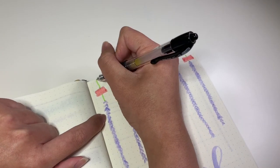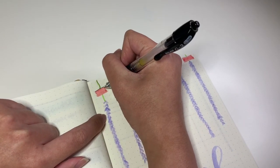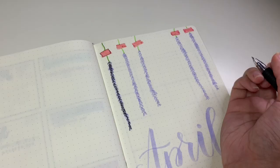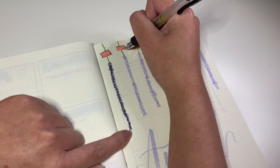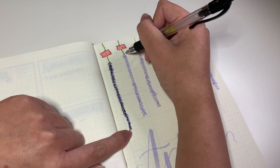After everything has been colored in, I went ahead and took my G2 Pilot pen and outlined and made details for all of the doodles.